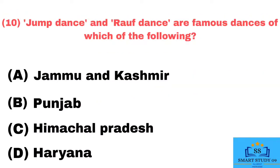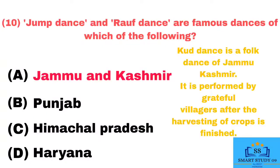Q10. Jump dance and Rauf dance are famous dances of which state? Answer: Jammu and Kashmir. Rauf dance is a folk dance of Jammu & Kashmir. It is performed by grateful villagers after the harvesting of crops is finished.